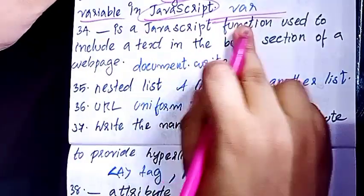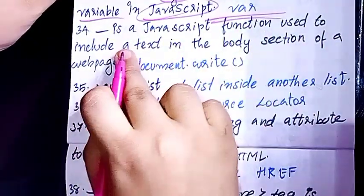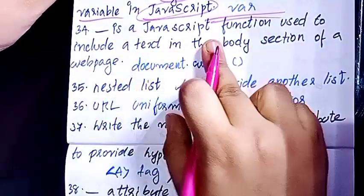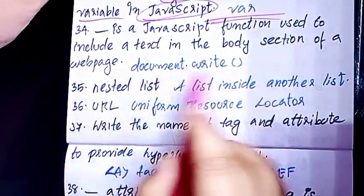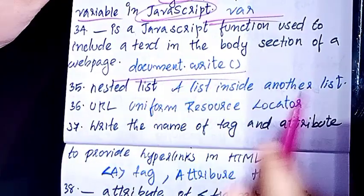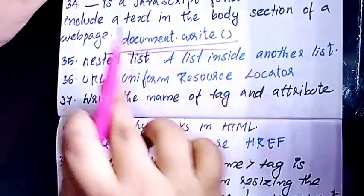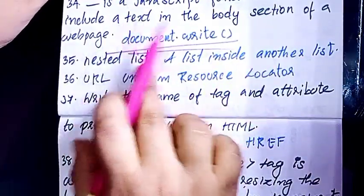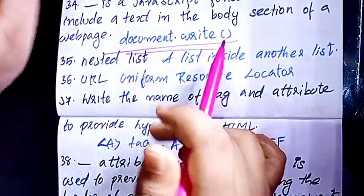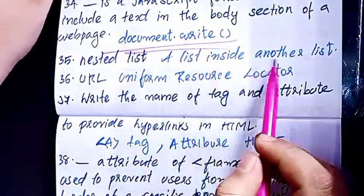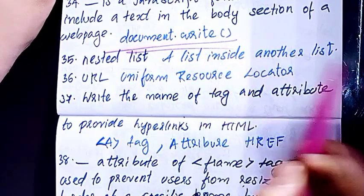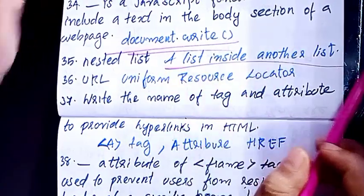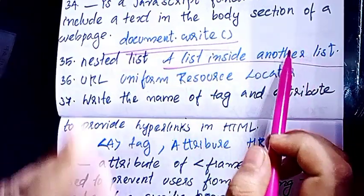Dash is a JavaScript function used to include text in the document section of a web page — that is document.write. Then nested list: a list is inside another list — one list inside another list.